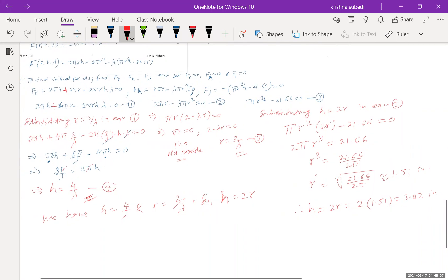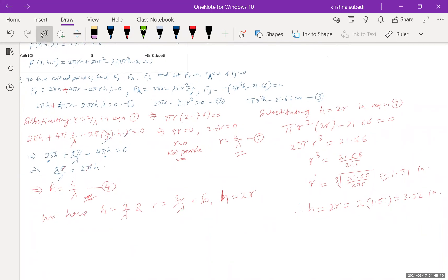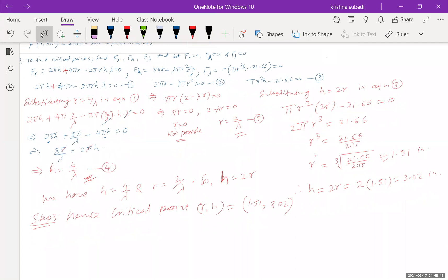So to minimize the surface area, that's what the radius and height should be. So we got the step 3, hence critical point r and h equals 1.51 and 3.02. That is our critical point, r and h.